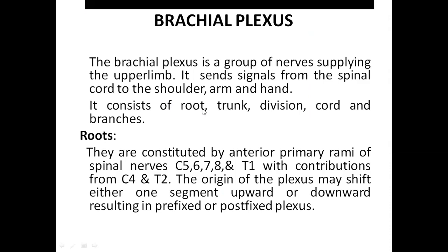It consists of root, trunk, division, cord and branches. The roots are constituted by the anterior primary rami of spinal nerves C5, C6, C7, C8 and T1, with contributions from C4 and T2. The origin of the plexus may shift either one segment upward resulting in prefix plexus, or it can shift one segment downward resulting in postfix plexus.